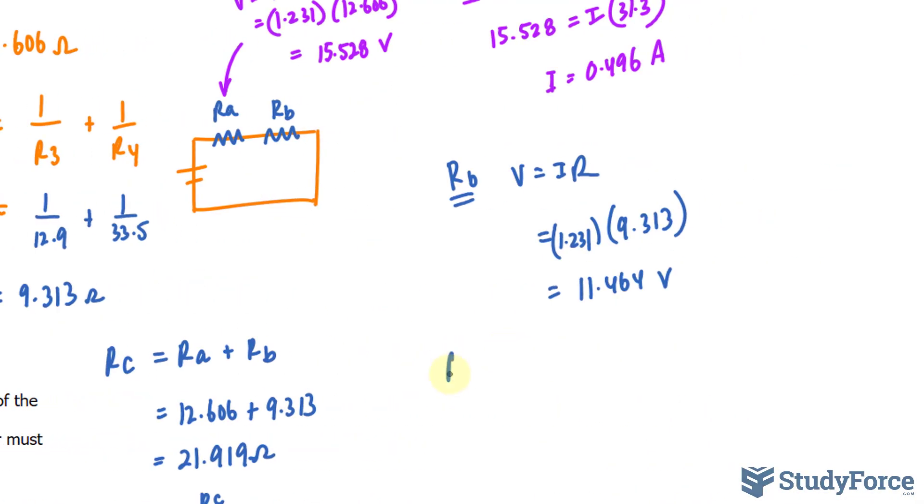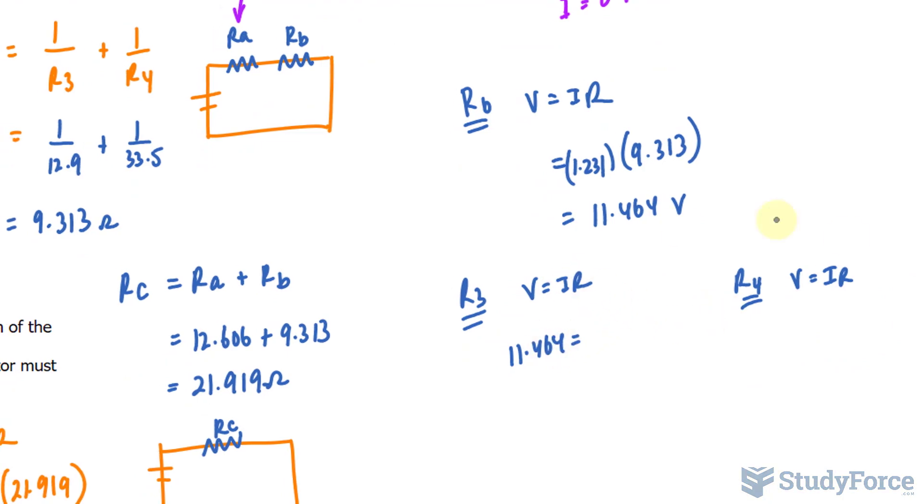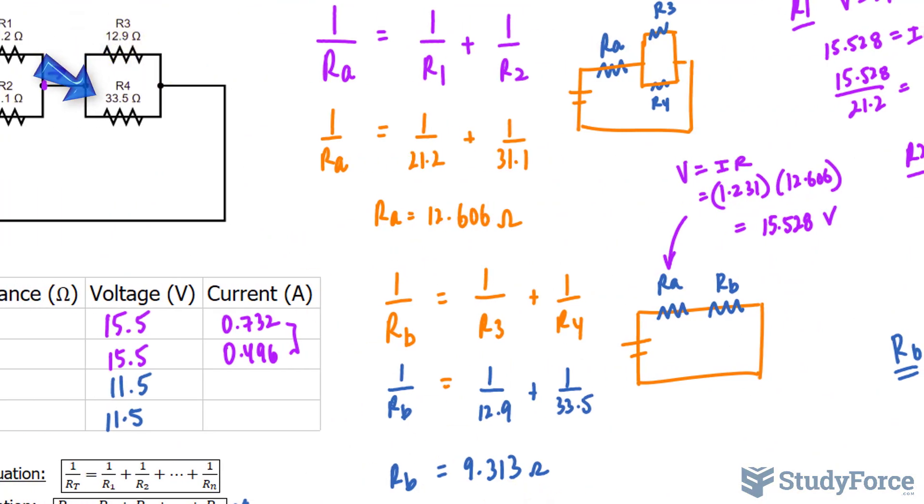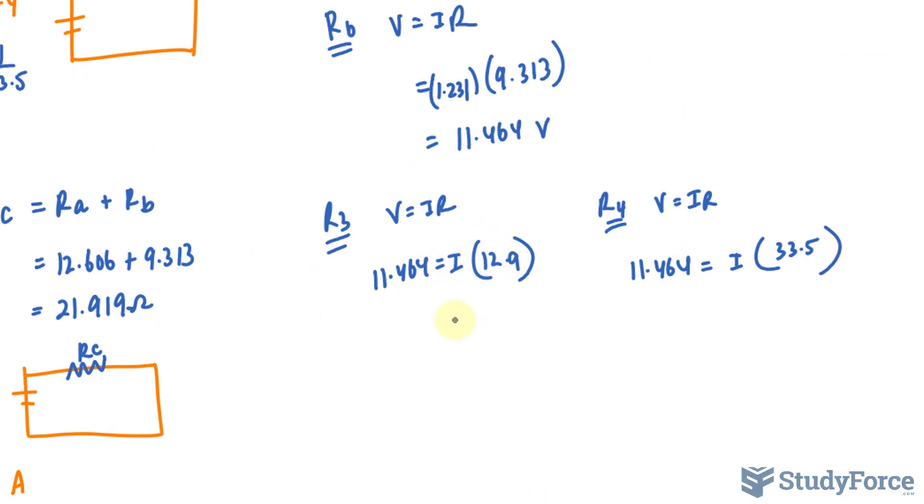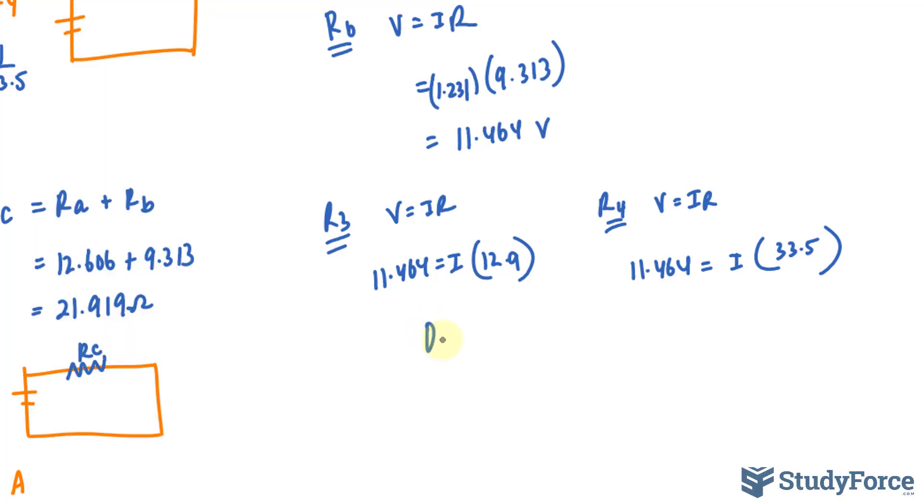Now, using the same strategy as before, let me write down R3 and R4. V is equal to IR. Remember that. That's Ohm's law. The voltage is 11.464. And we're looking for the current. We know their resistance. It was given in the question. 12.9 and 33.5. Okay, all we have to do now is solve for I in both of these equations. 11.464 divided by 12.9. And that makes 0.888. 0.888 is the current at R3.